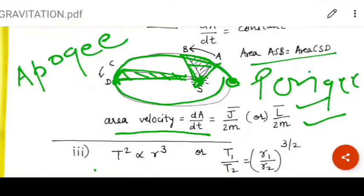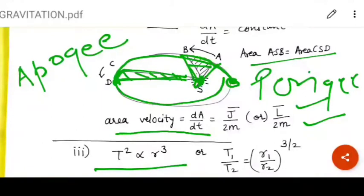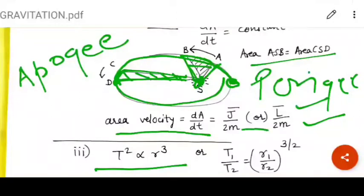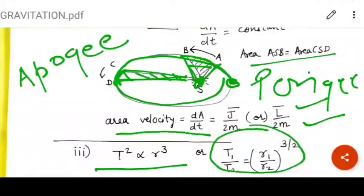Next comes Kepler's third law, which is also called as law of time period. According to this law, square of time period is directly proportional to cube of the radius. We may use this shortcut formula.